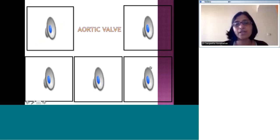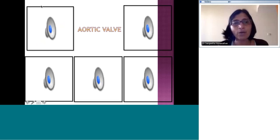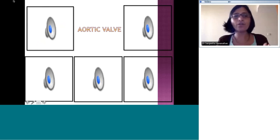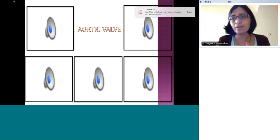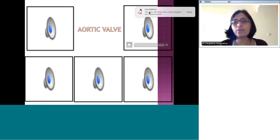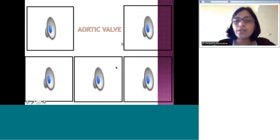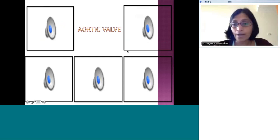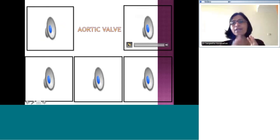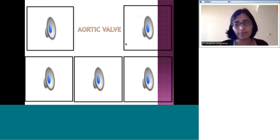One important point to emphasize: although there are some recommendations about projections, each patient is individual and projections have to be customized to suit the patient. For the right ventricle, we talked about using the lateral view or an anterior oblique view — LAO cranial or RAO — can also be used. The RV is something you can image from multiple views, similar to the aortic valve.